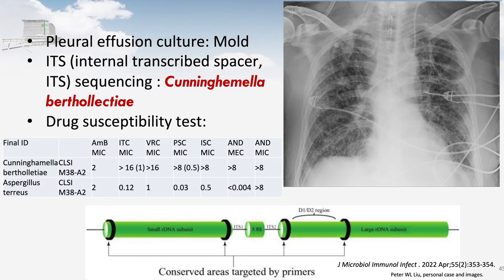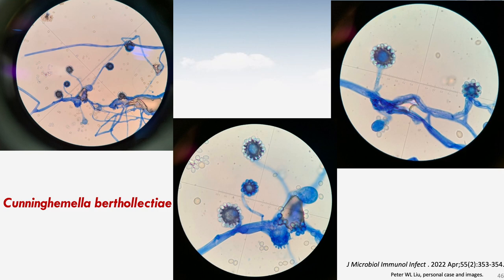We sent the pleural effusion for identification — culture grew mold, identified as Cunninghamella species. Drug susceptibility testing showed high resistance to azoles and sensitivity only to amphotericin B. We shifted isavuconazole to liposomal amphotericin B, but unfortunately the patient expired during treatment. This is the first case published in Taiwan of a severe COVID-19 patient with both CAPA and mucormycosis.